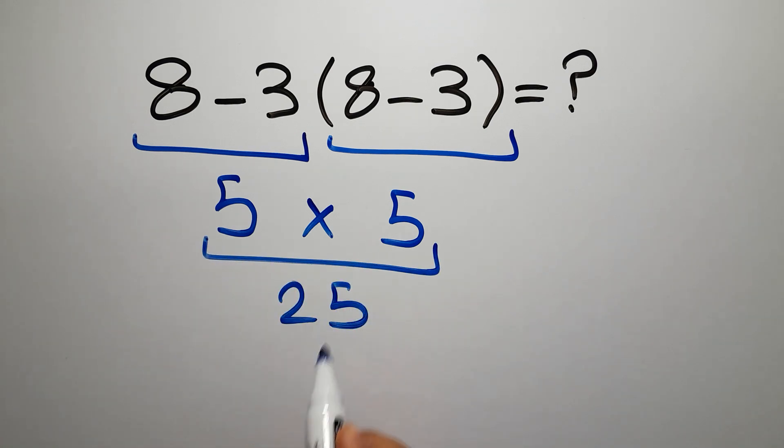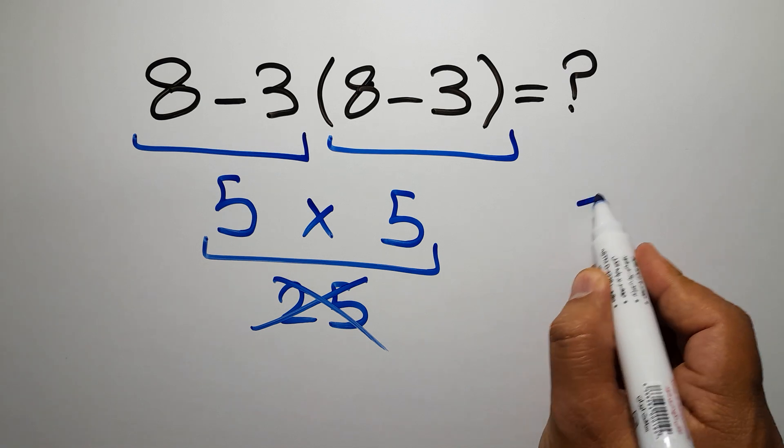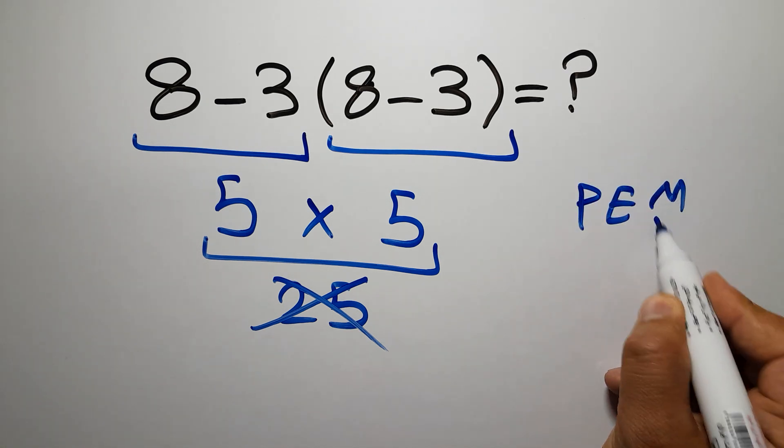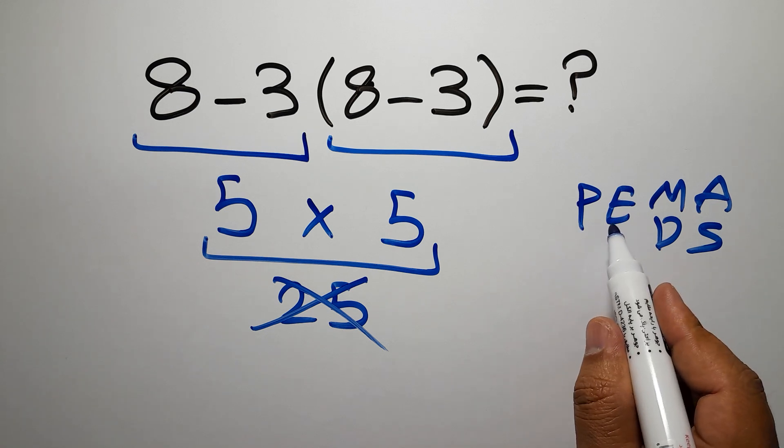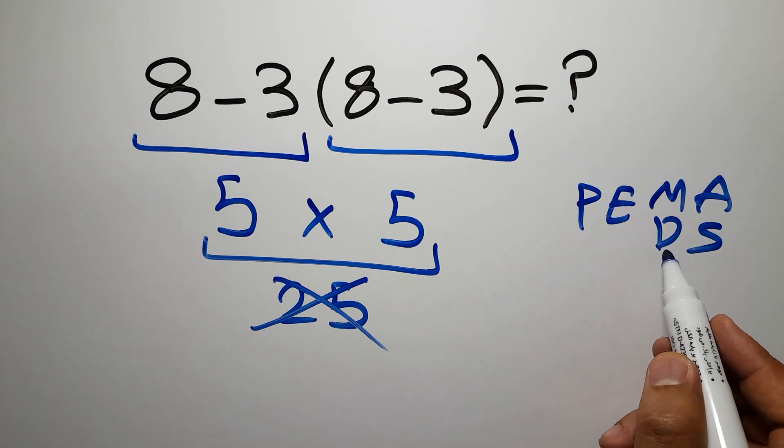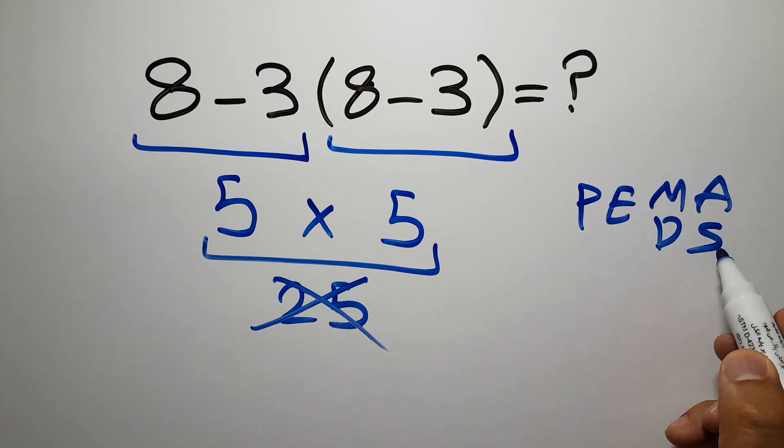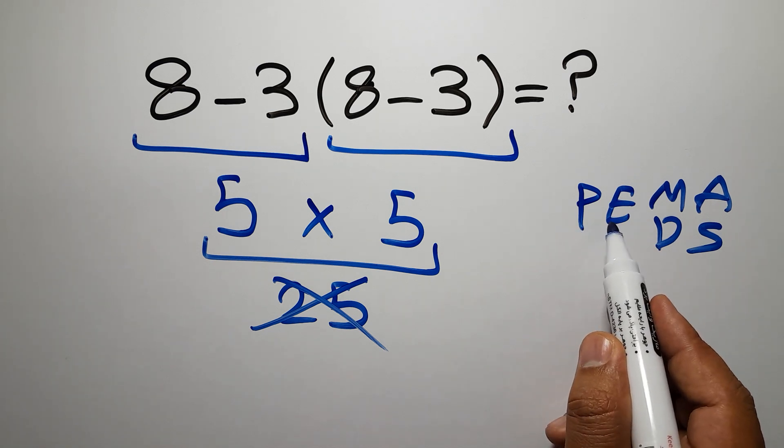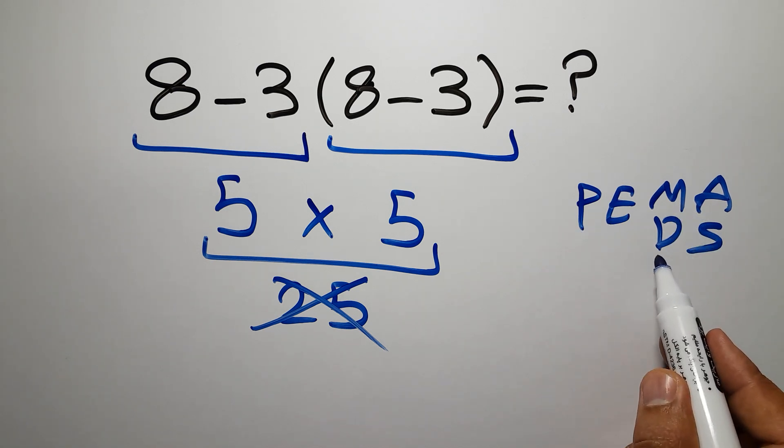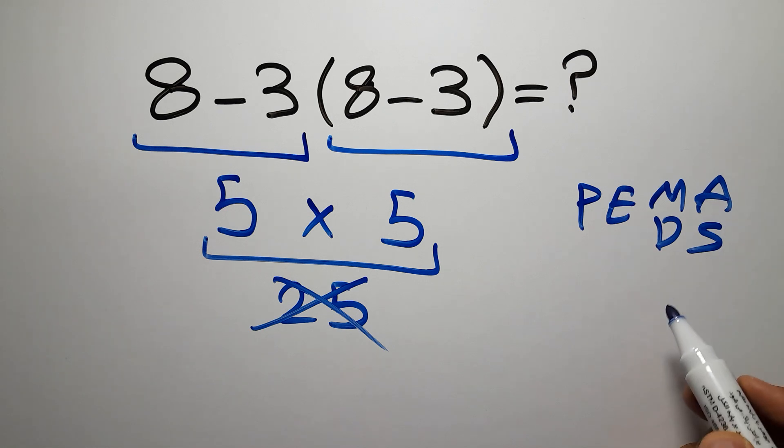But this answer is not correct because according to the order of operations, which is PEMDAS, P stands for parentheses, E stands for exponents, M and D stand for multiplication and division, and A and S stand for addition and subtraction. First we have to do parentheses, then exponents, then multiplication or division, and finally addition or subtraction.